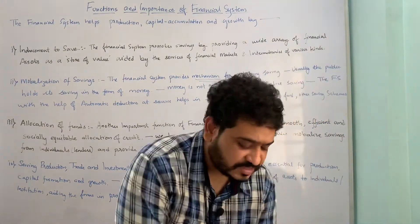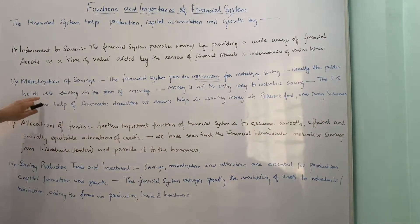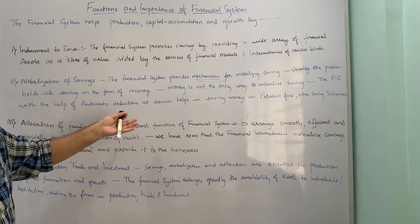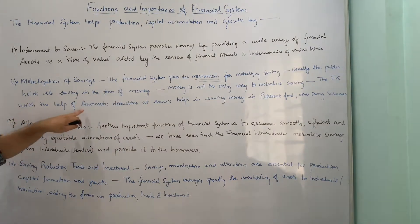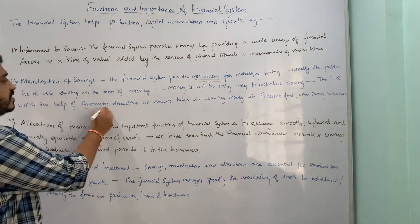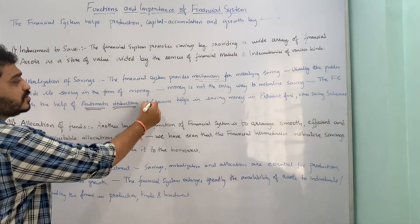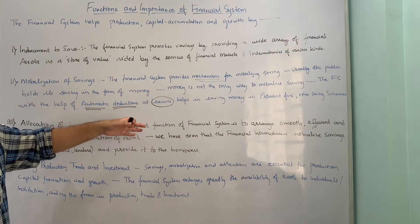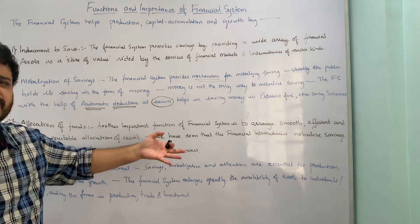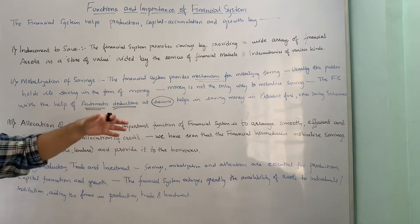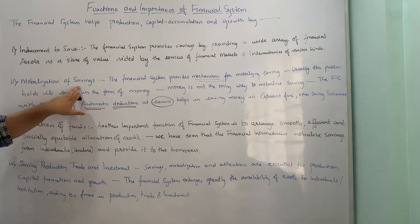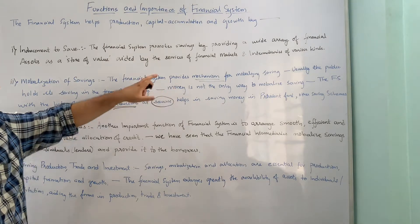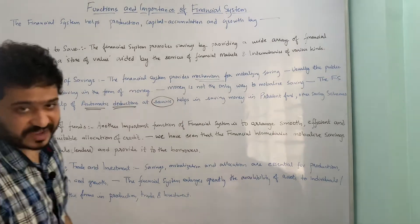Usually the public holds its savings in the form of money, but money is not the only way to mobilize savings. The financial system, for example, provides something called automatic deduction at source, which helps in the promotion of savings in provident funds or other different kinds of savings instruments and schemes. This is how the mobilization of savings is aided by the financial system, and it is the second point of importance or function.